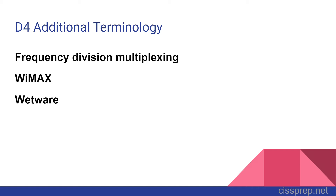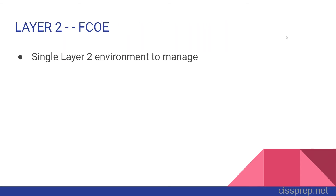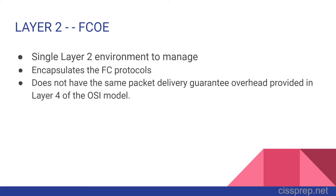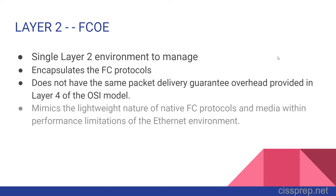Wetware is a new term that refers to any policies or procedures that guide the behavior of employees through methods of education and training. It's called 'wet' because it's basically whatever's inside your skull — the brain's coding as opposed to hardware or software coding. Fiber Channel over Ethernet has several benefits: it can provide a single Layer 2 environment to manage, it encapsulates Fiber Channel protocols without the overhead of packet delivery guarantees that Layer 4 has in the OSI model, and when implemented correctly, FCoE can mimic the lightweight nature of native Fiber Channel protocols within the performance limitations of the Ethernet environment.